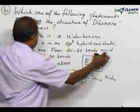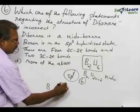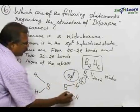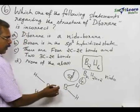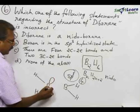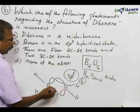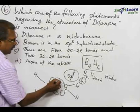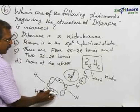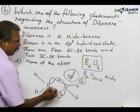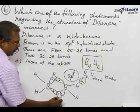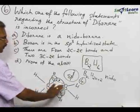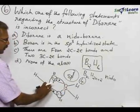There are four two-center two-electron bonds and two three-center two-electron bonds. Four hydrogens are bonded to the two boron atoms with normal bonding. The remaining two sp³ hybrid orbitals — one having an electron and another empty — overlap through the spherical orbital of hydrogen, forming what is called the banana bond. These two bonds lie above and below the plane containing the two boron and hydrogen atoms, and this is the three-center two-electron bond.